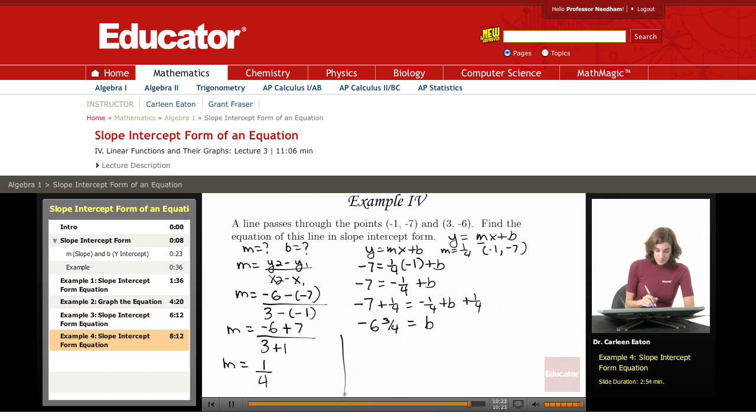Okay, now, what did they ask me to do? They asked me to write the equation in slope-intercept form, y equals mx plus b. I can do that now because I have m is 1 fourth, and I have b is negative 6 and 3 fourths.